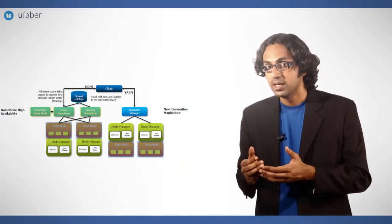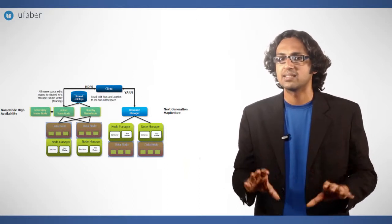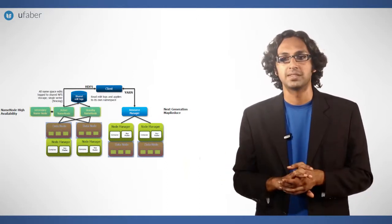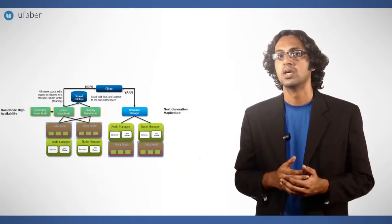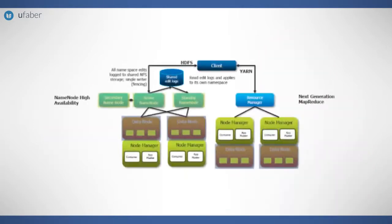When the ANN is working, the SNN would just act as a silent node recording the updates. The name nodes must use highly available shared storage to share the edit log. When a standby name node takes over, it reads up to the end of the shared edit log to synchronize its state with the active name node and then continues to read entries as they are written by the active name node.